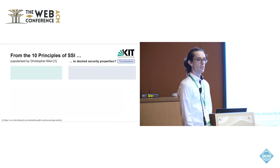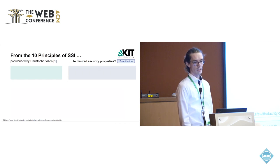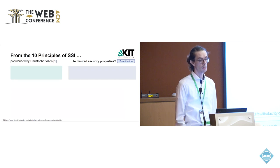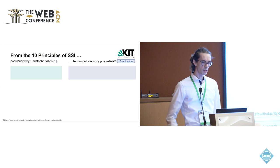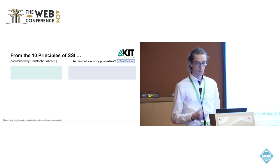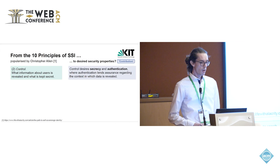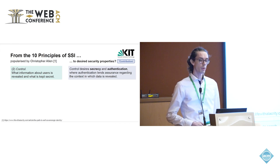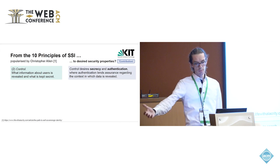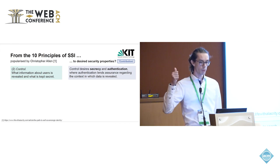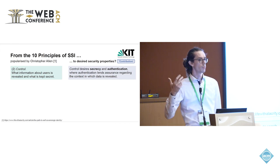To achieve something like this, there are ten principles of SSI that should be adhered to, popularized by Christopher Allen. When we look at the security of such ideas, we want to distill formal security properties from these principles. For example, the principle of control says a user should control which information is kept secret and which is revealed. This directly translates to: we want secrecy and we want authentication — authentication being the context in which data is revealed, that is, to whom it is revealed.